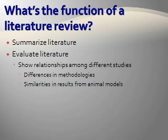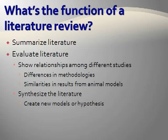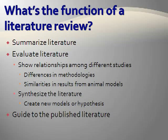Perhaps differences in methodologies lead to different results, or research using different animal models contains similarities, suggesting a general principle at work — for example, research on life span in nematodes, fruit fly, and mice. Another key element of a good literature review article is that it synthesizes the literature. That is, it makes conclusions based on many studies. Often they will propose new models or hypotheses to explain a particular phenomenon. Finally, literature review articles serve as a guide to the published literature. They typically cite important work done and are a great way to access relevant primary literature related to your topic.